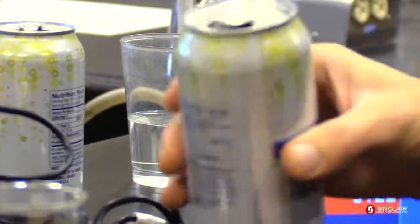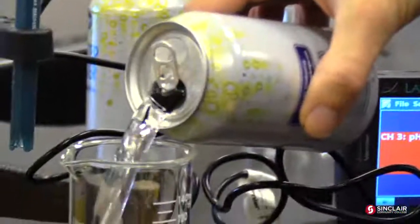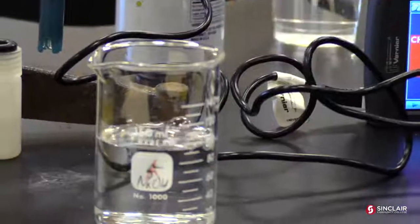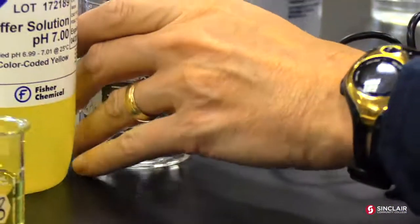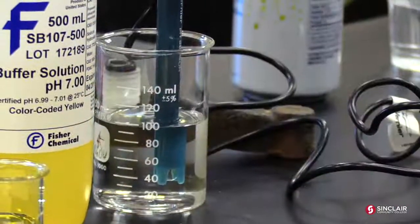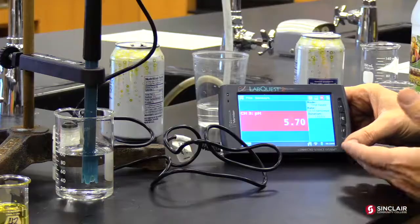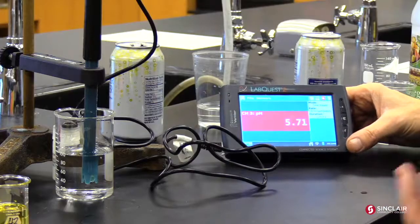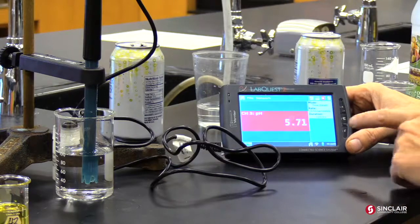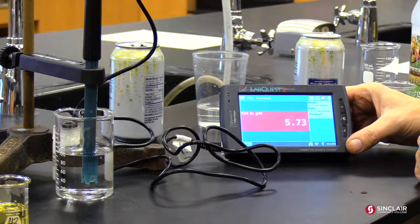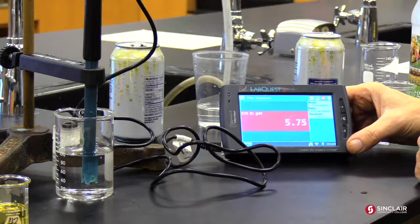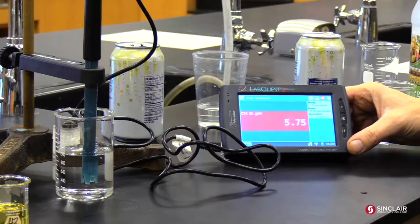This is some seltzer water that I opened three days ago. Notice no bubbles. That's because all the CO2 has come out of it. And let's see what this thing's pH runs. And as you can see, the flat seltzer water, which is now mostly water, not that concentrated or carbonated, it's up above pH 5.7. So that's like 1.7 pH points. Remember, two pH points is a hundred times less concentrated in hydrogen ion.